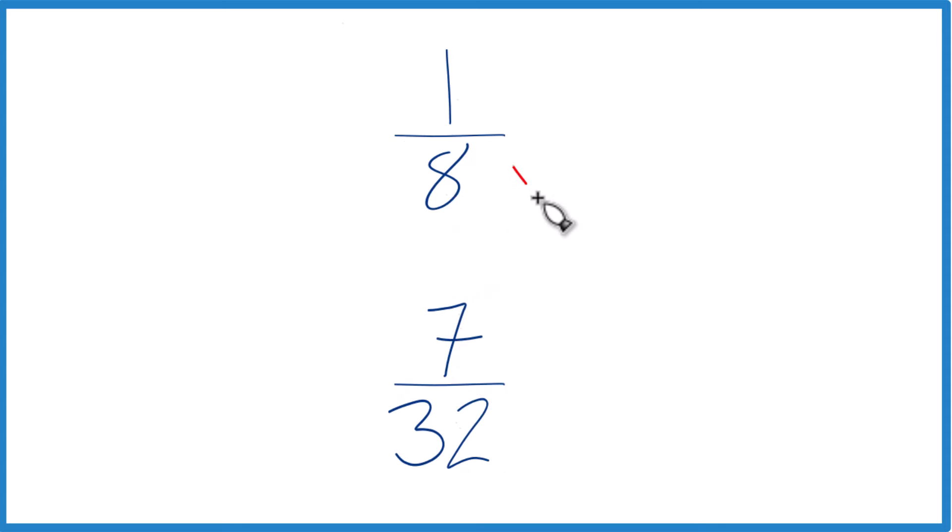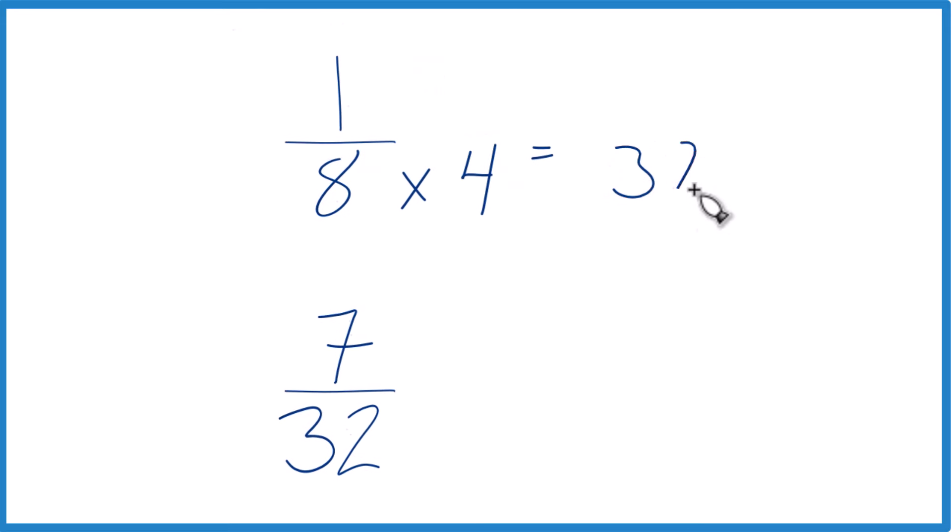If we took 8 times 4, that would equal 32. And then down here, we already have 32, let's just keep that as 7/32.